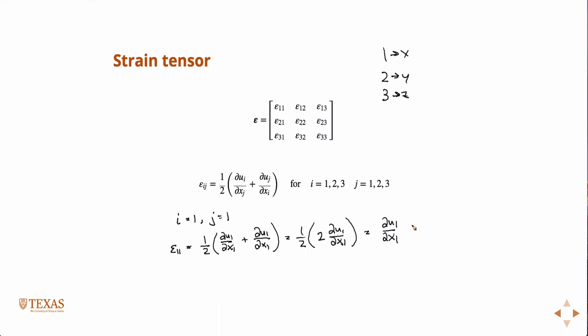And in transforming it back to Cartesian lingo, where one is X, two is Y, three is Z, this is just partial UX partial X. And so that's what we had for our normal strain, the X normal strain is that guy.